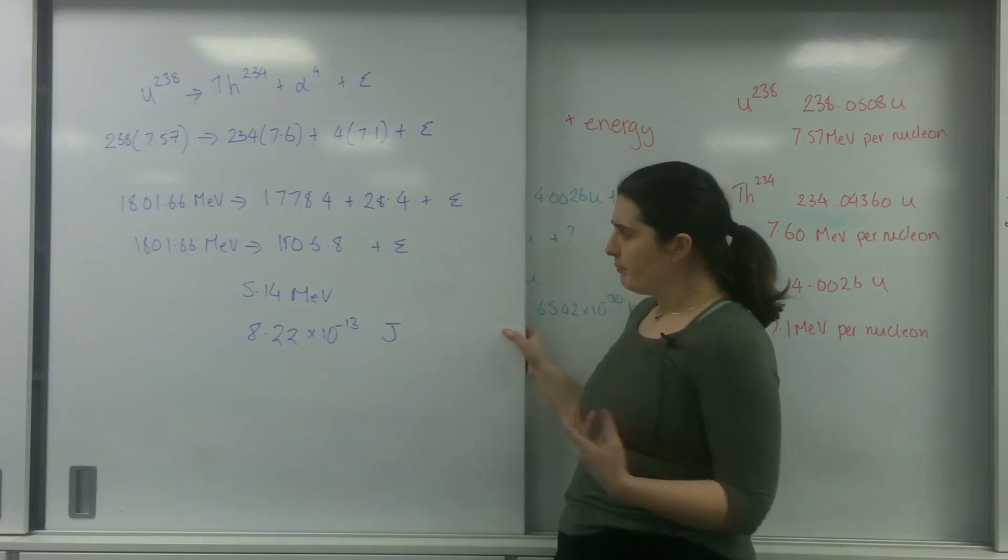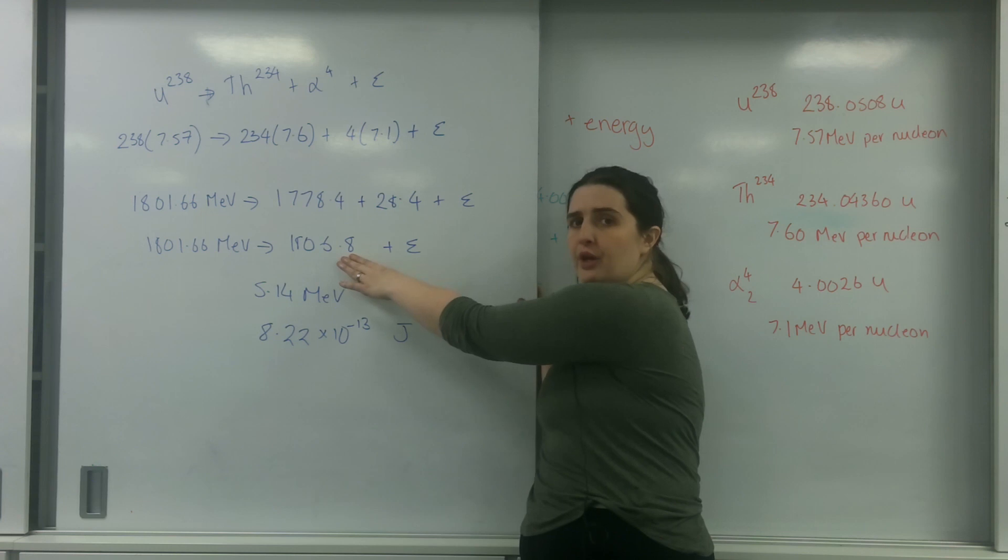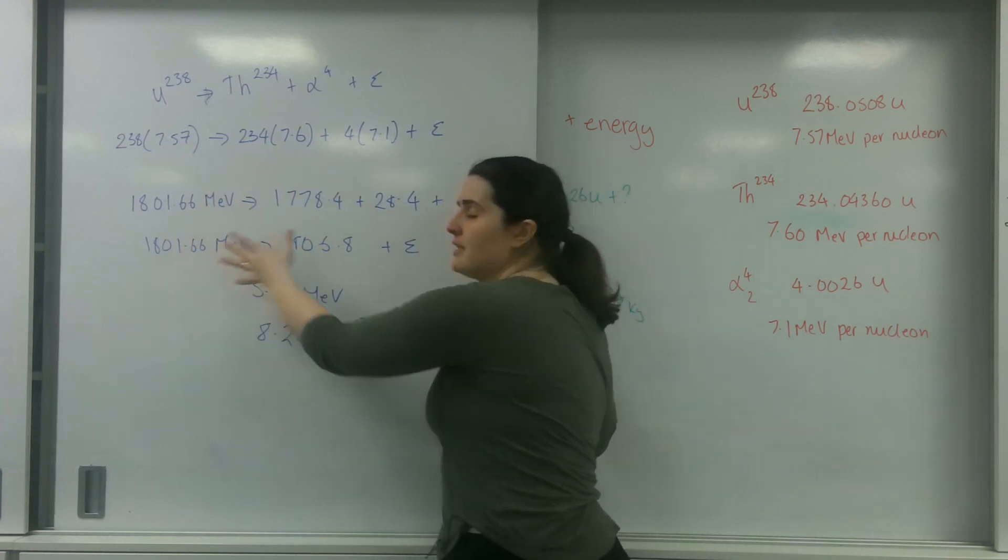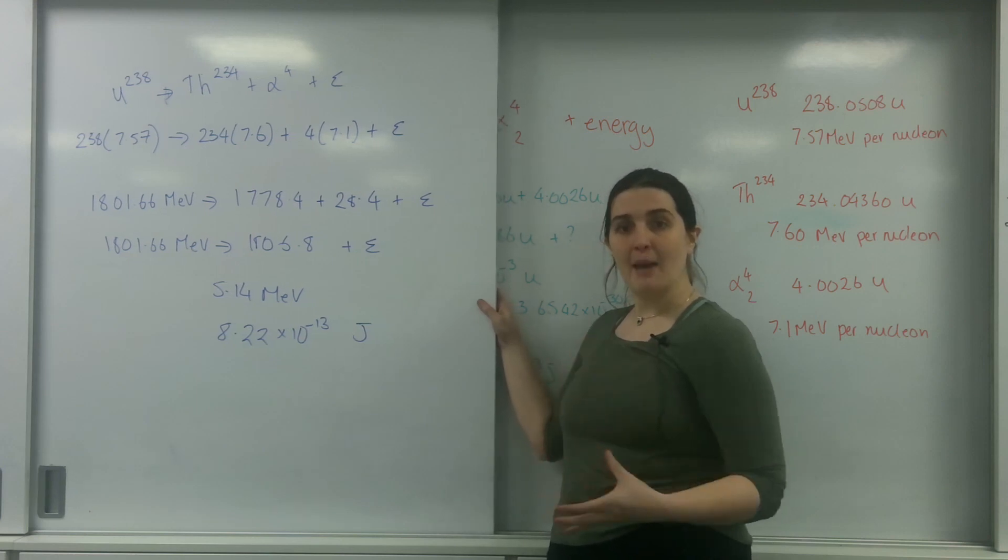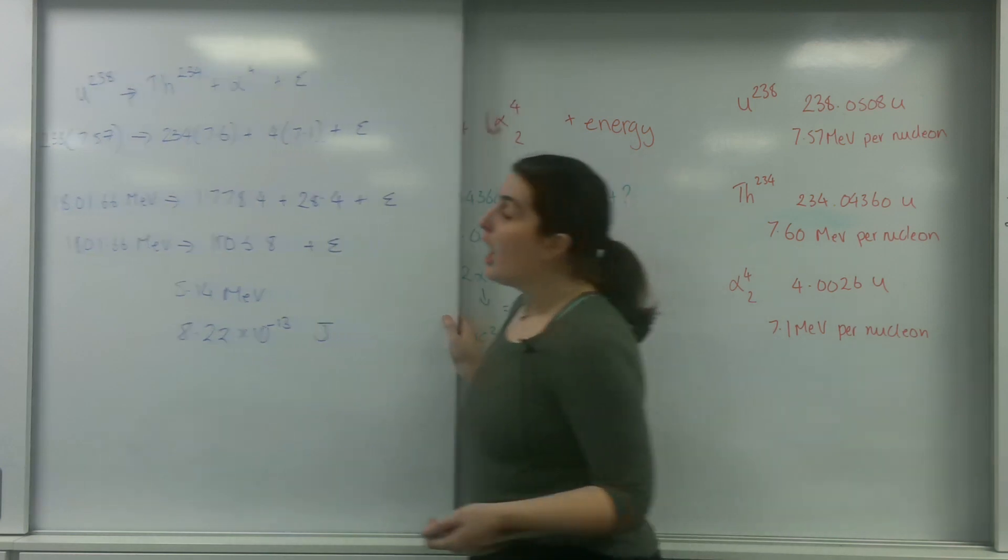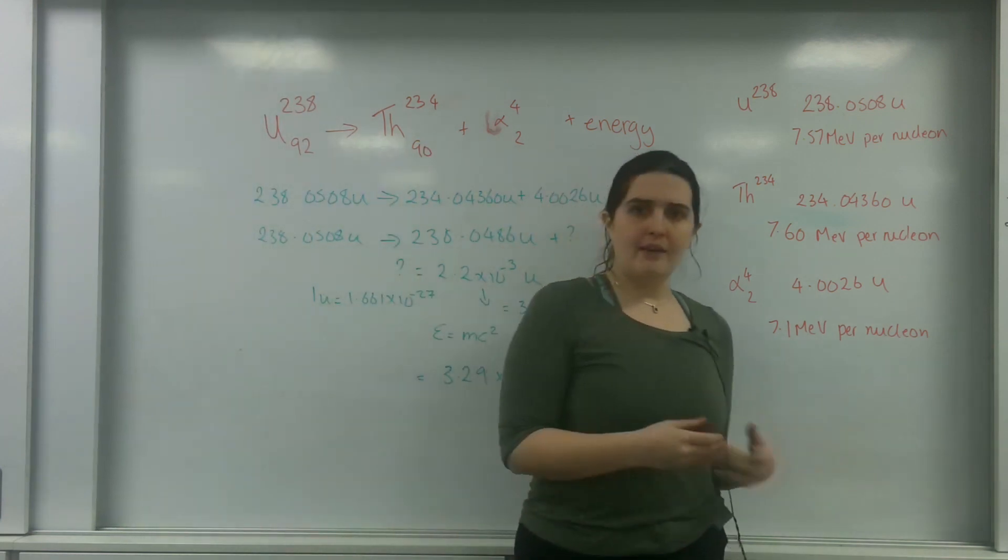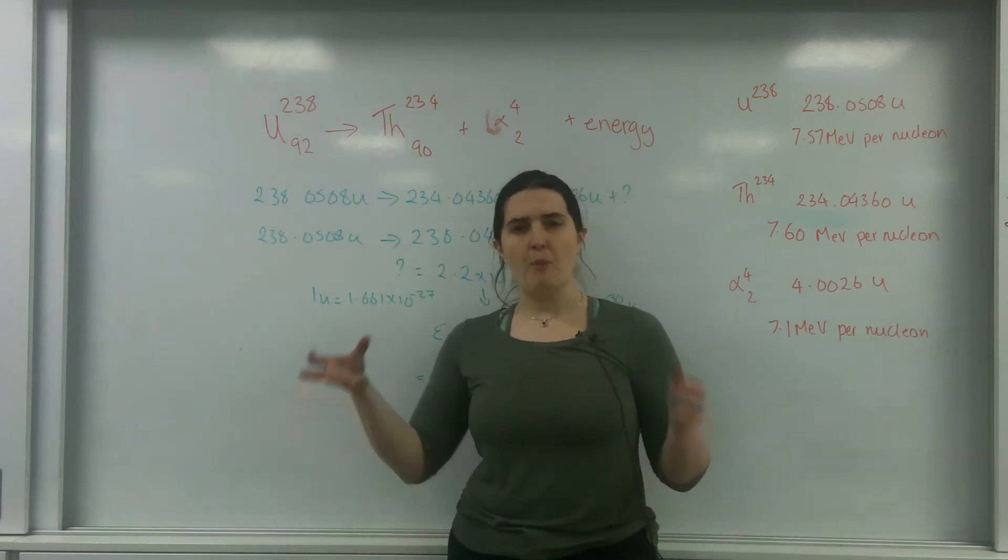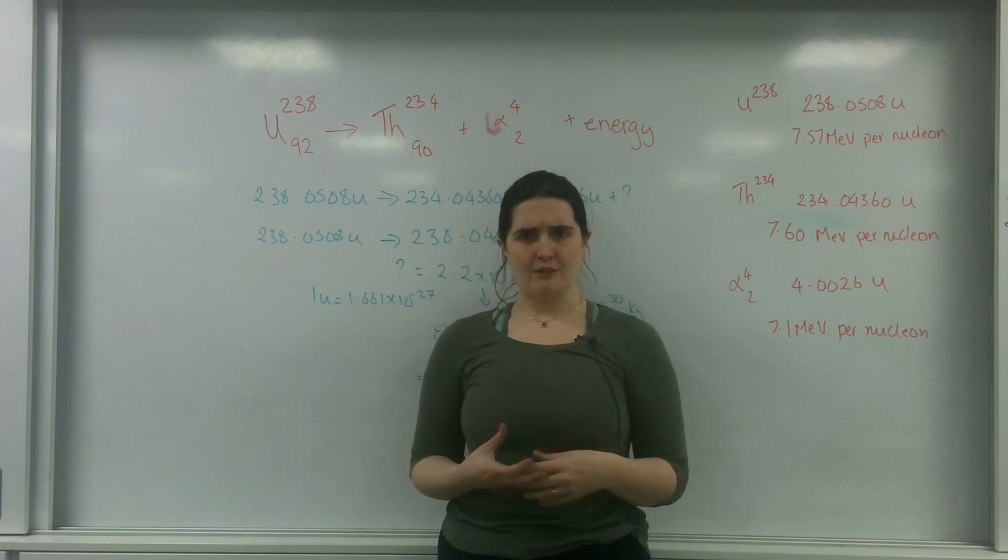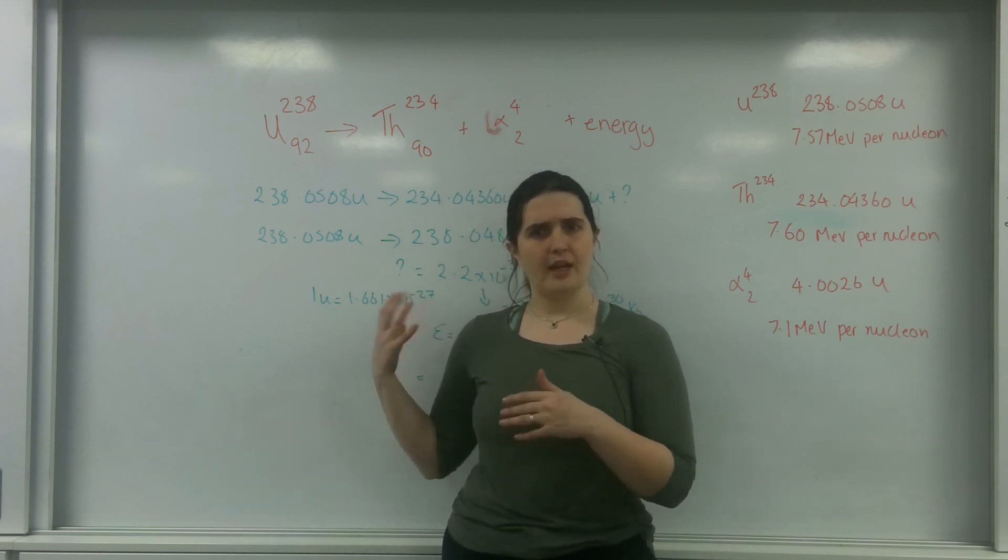The rules are the same. My binding energy per nucleon must have a bigger product than reactant. The whole idea is that the strong nuclear force has increased. If you notice with nuclear fusion, when I got bigger, my strong nuclear force increased and I had energy release. But with nuclear fission, I have to go smaller.